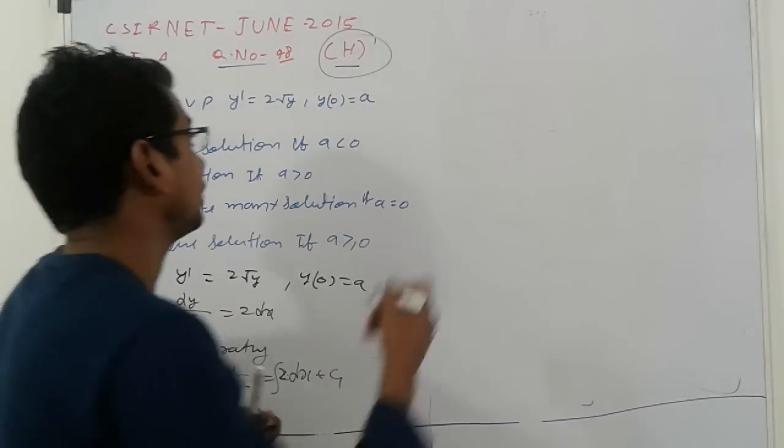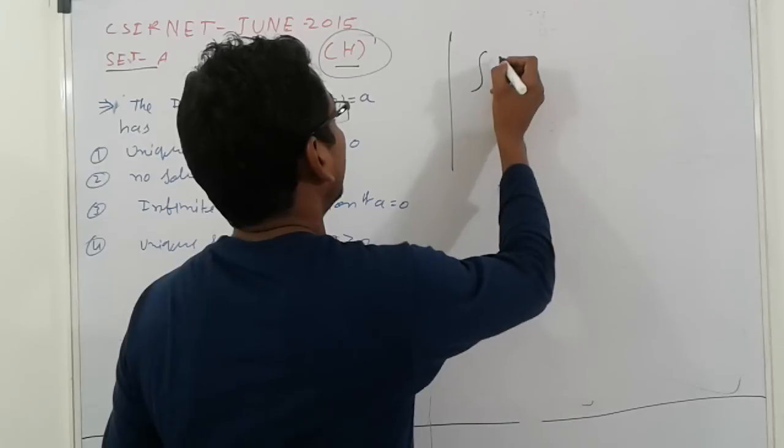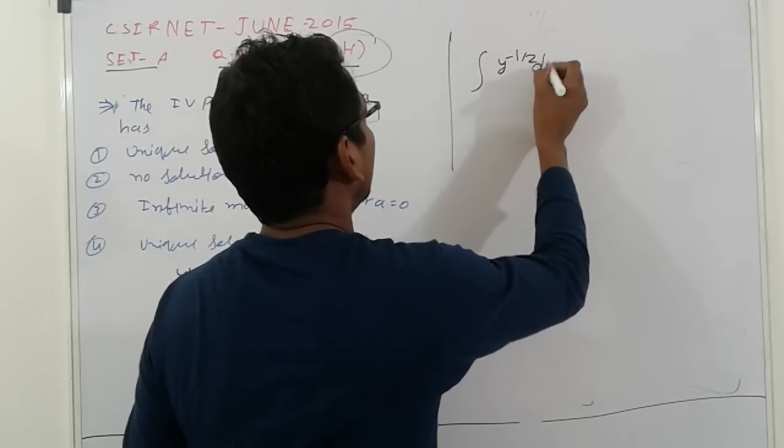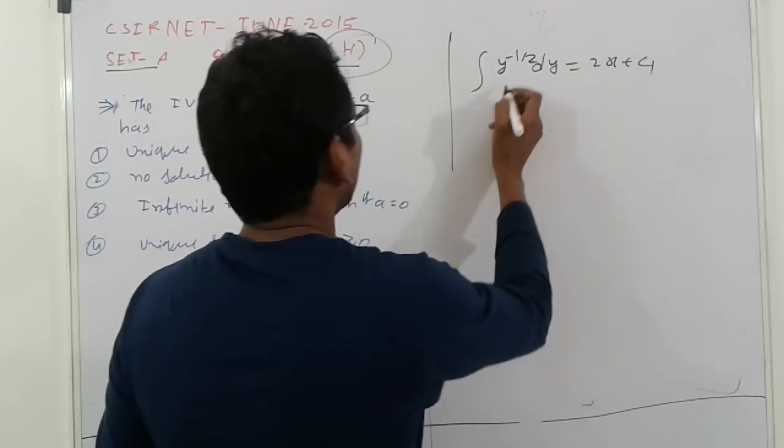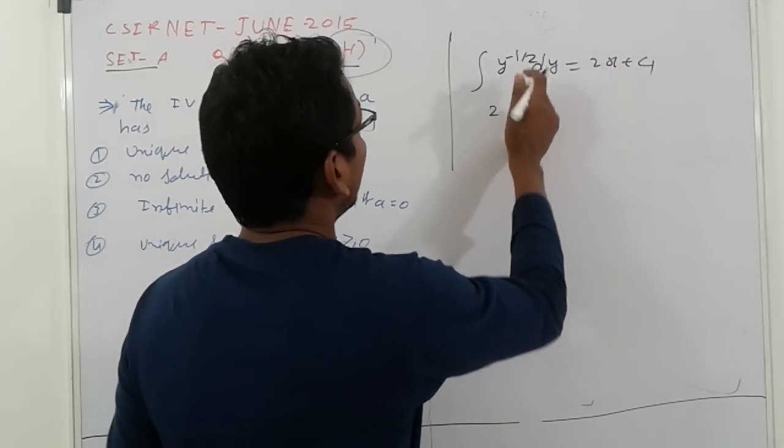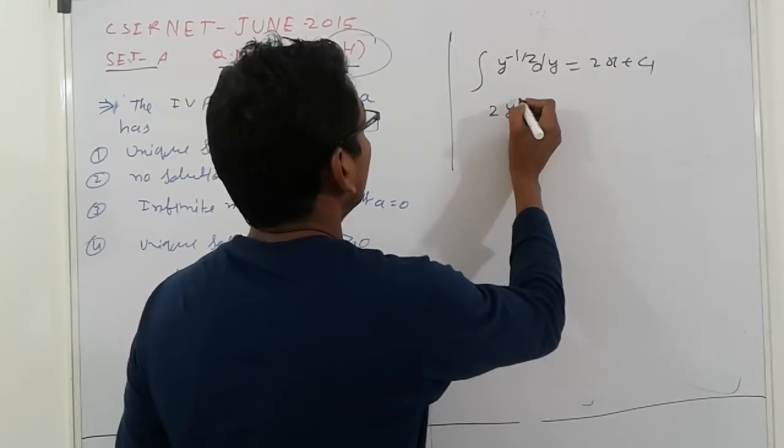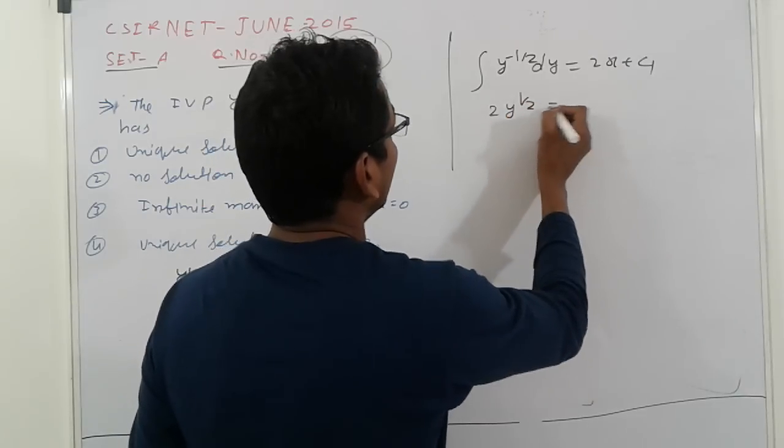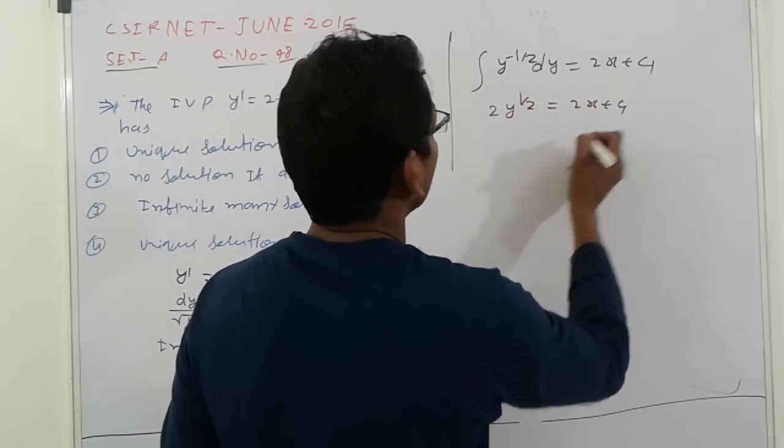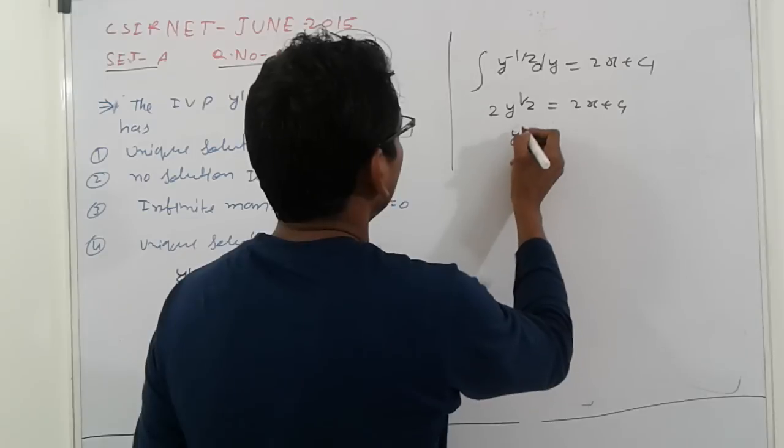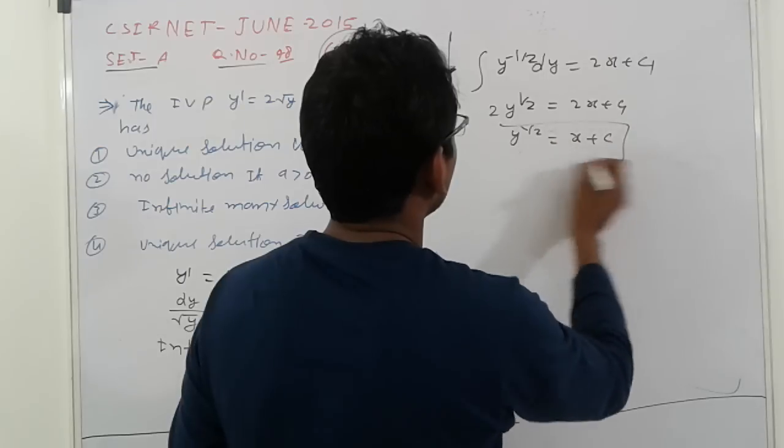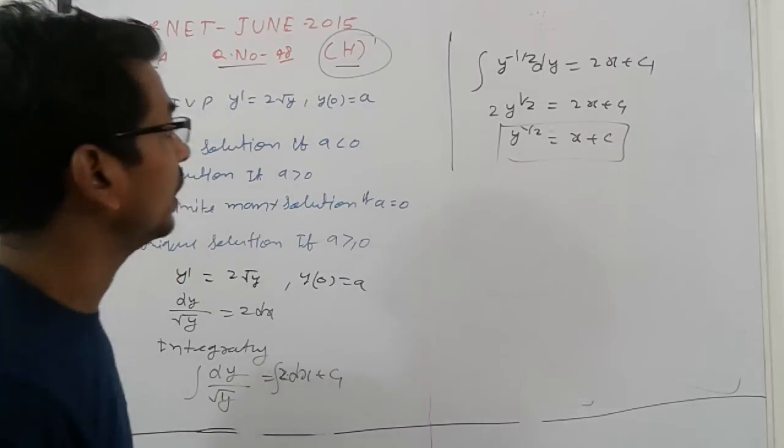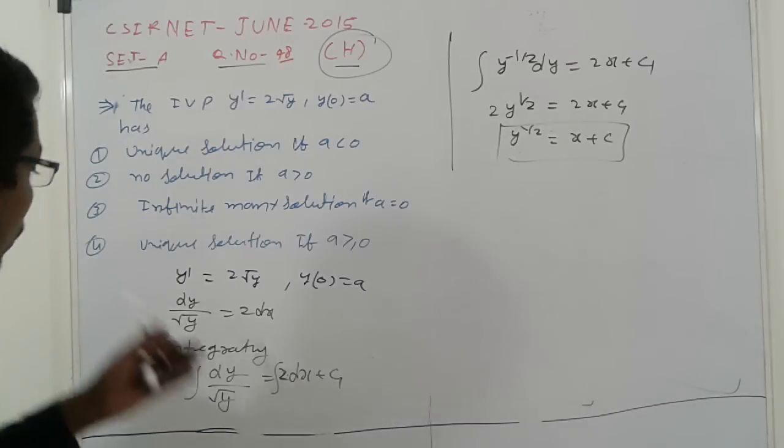Integration gives us y^(-1/2) dy = 2x + c₁, otherwise 2y^(1/2) = 2x + c₁, or y^(1/2) = x + c where c is another constant taken here.